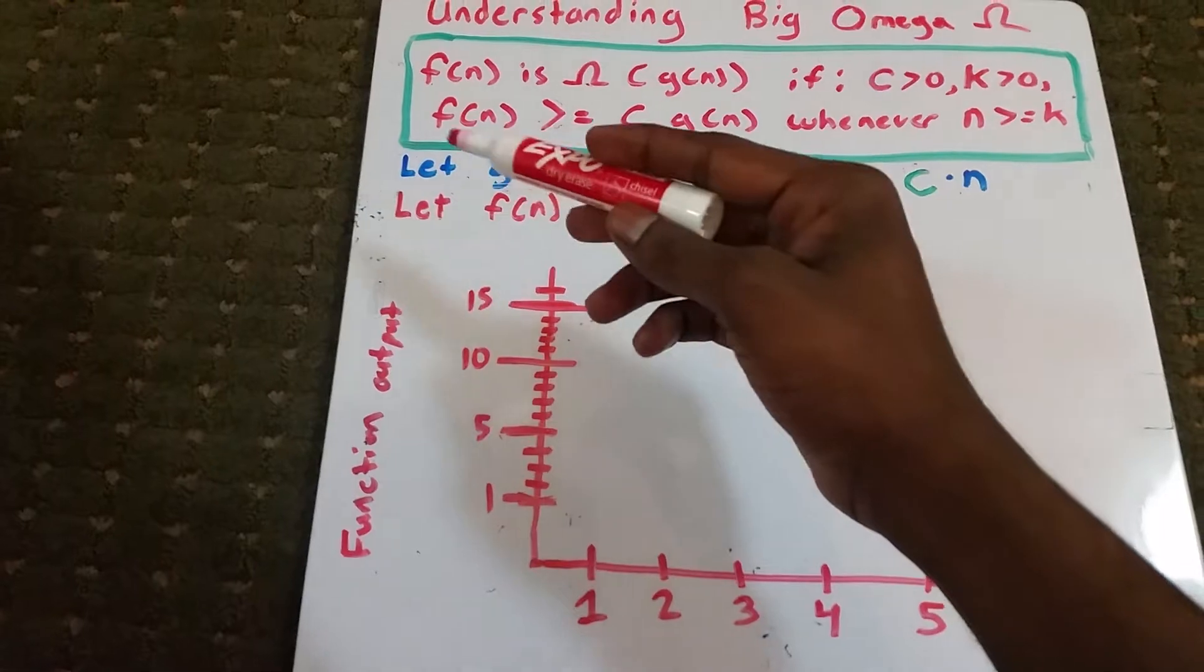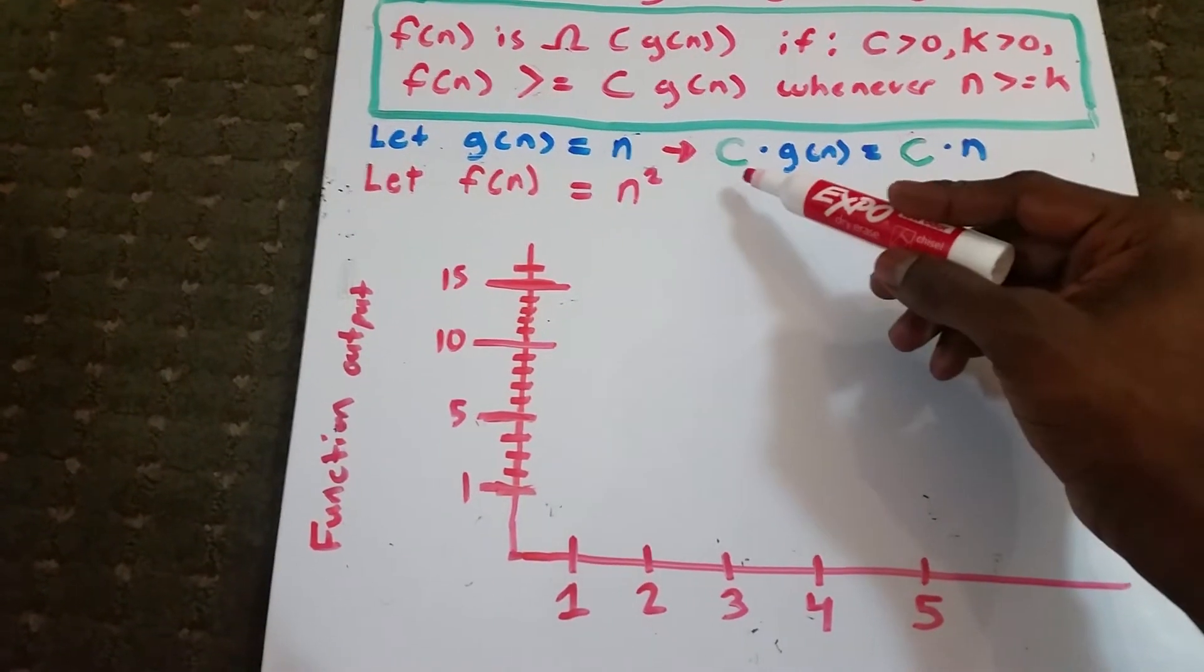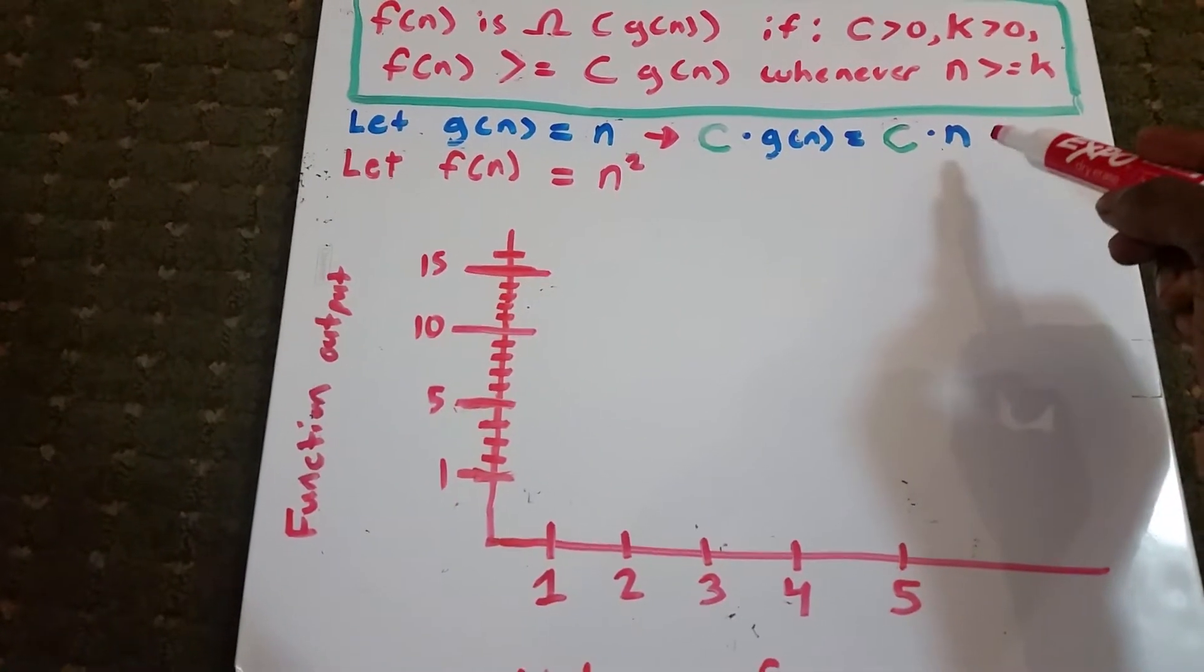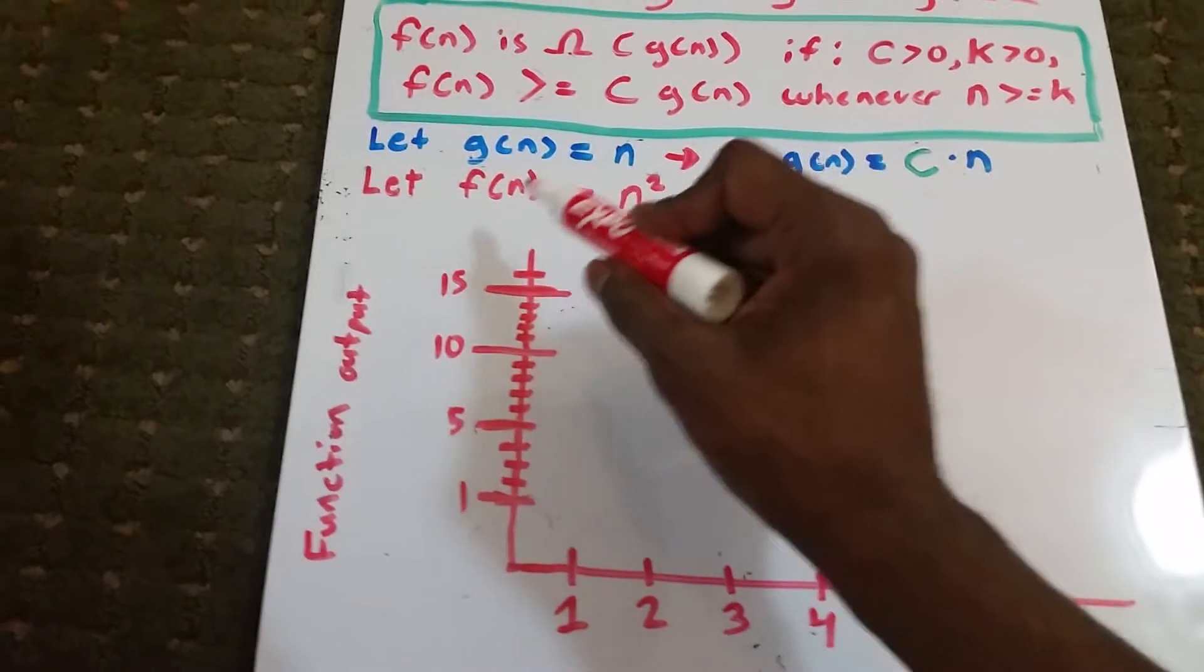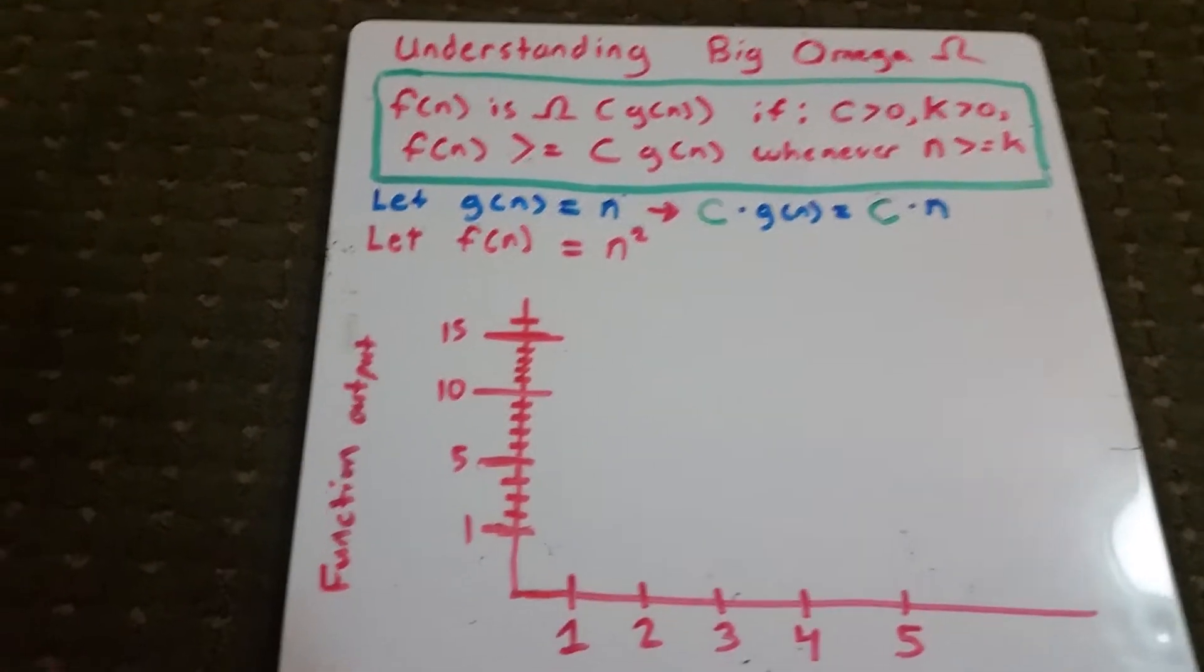So here I let g of n equal n, which implies that some constant c times g of n is equal to some constant c times n. And I let f of n equal n squared. Now we're going to go ahead and graph this.